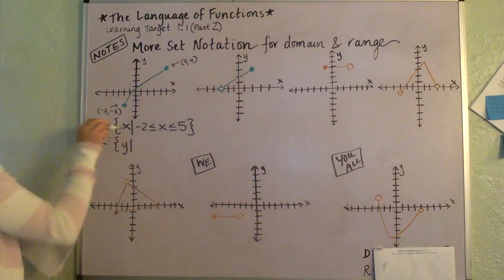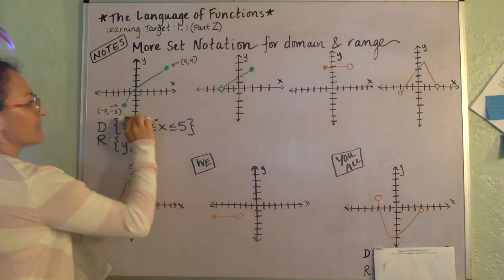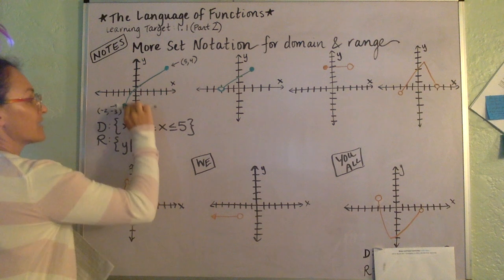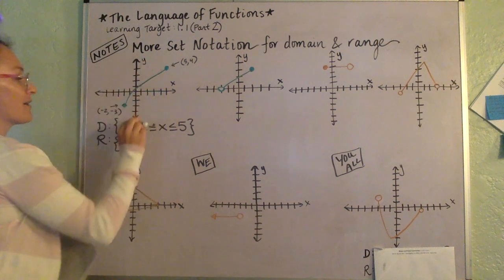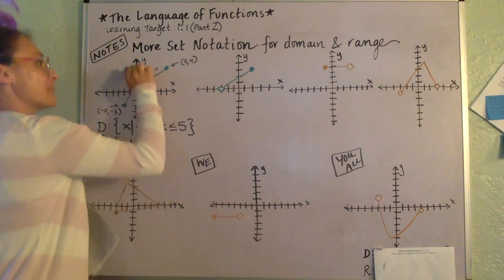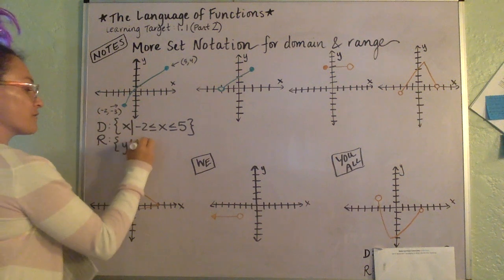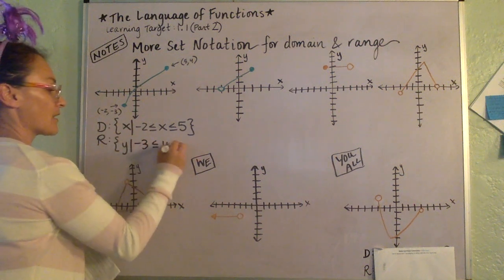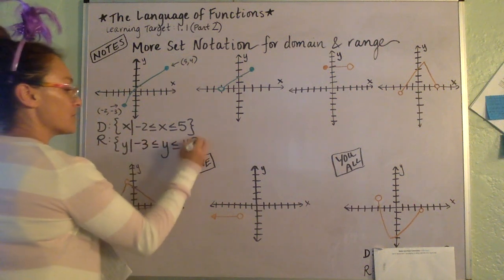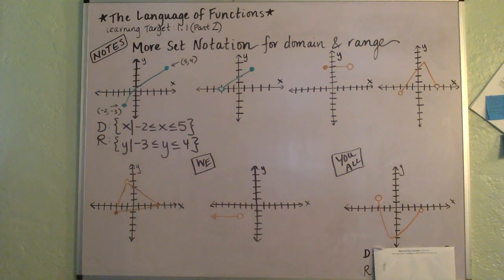And then same thing for the range. The range is a scan down to up. From negative three up to four — so from negative three up to four — using that compound inequality notation.